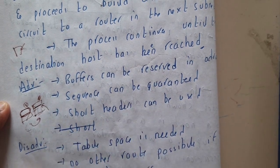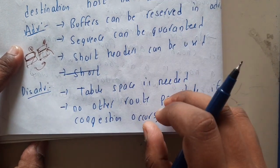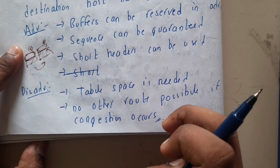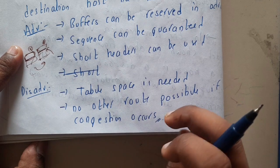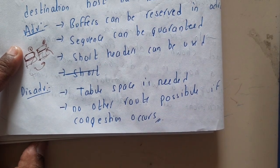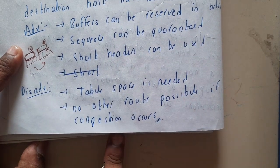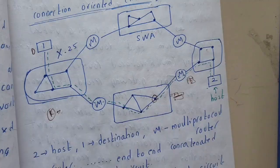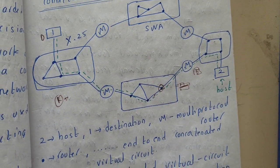The main disadvantages are: first, table space is required — every router and multi-protocol router must maintain a routing table recording where to forward packets. Second, no alternate routing is possible if congestion occurs — since only one path is known, the system must blindly wait or keep transmitting on that congested path with no alternative.